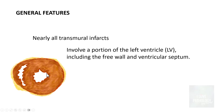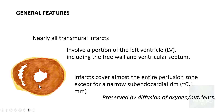Before we understand exactly what happens in the myocardium, let us see some general features. Nearly all transmural infarcts involve a portion of the left ventricle including the free wall and the ventricular septum. Transmural infarcts cover almost the entire perfusion zone except a very narrow subendocardial rim of around 0.1 mm, which is spared because the endocardium is preserved by the diffusion of oxygen and nutrients from the blood within the chambers.